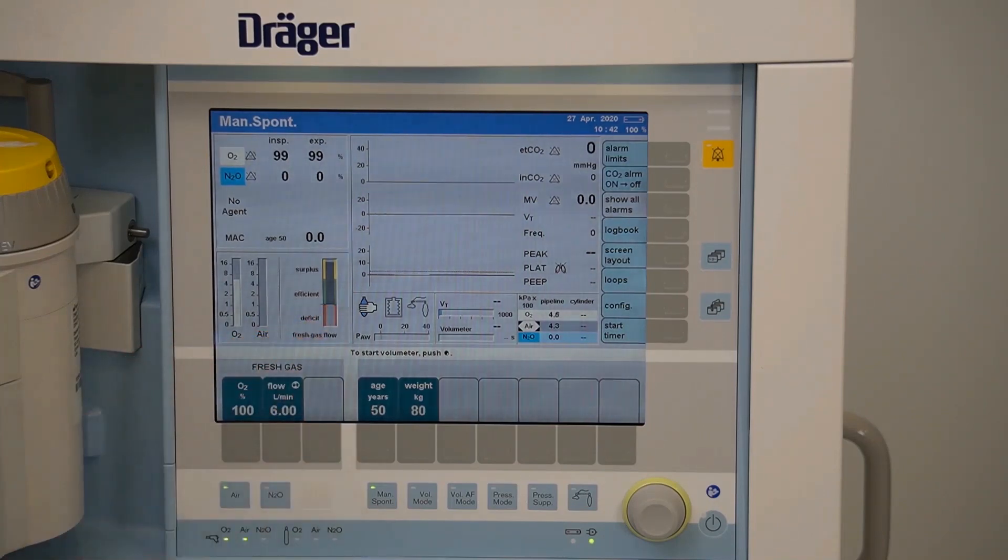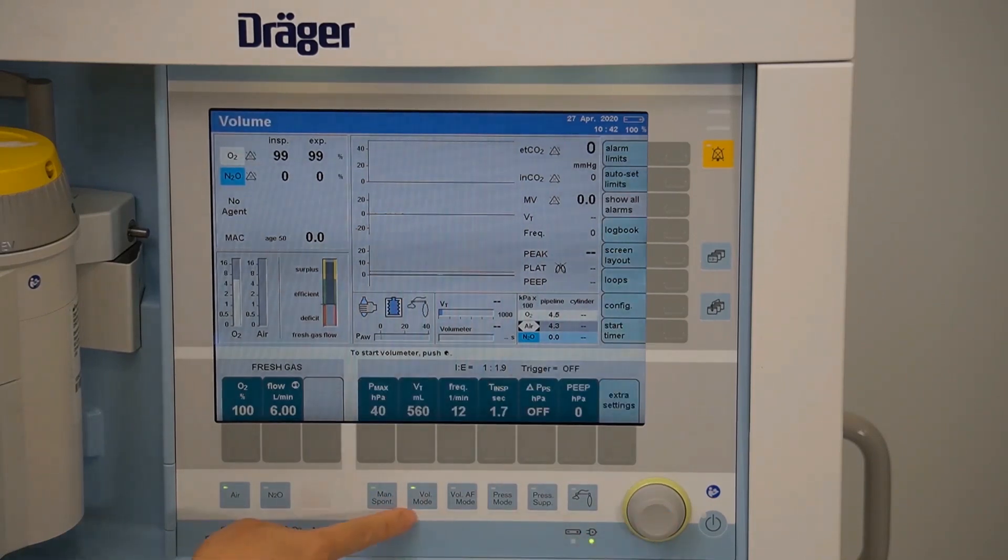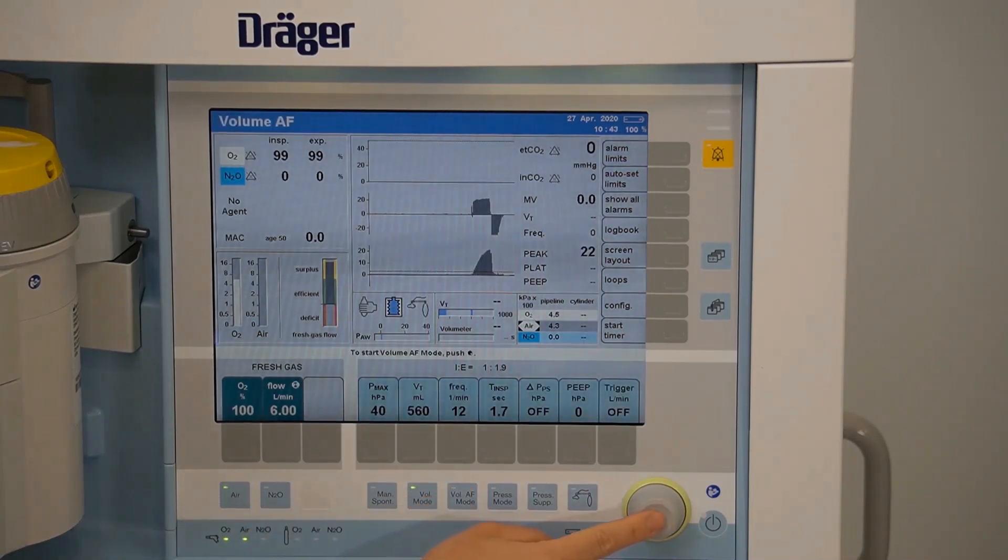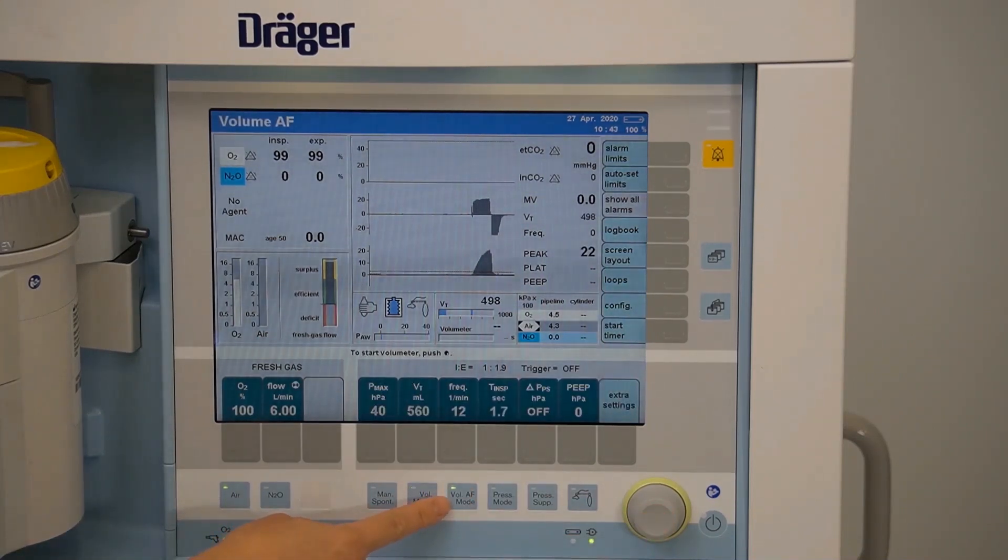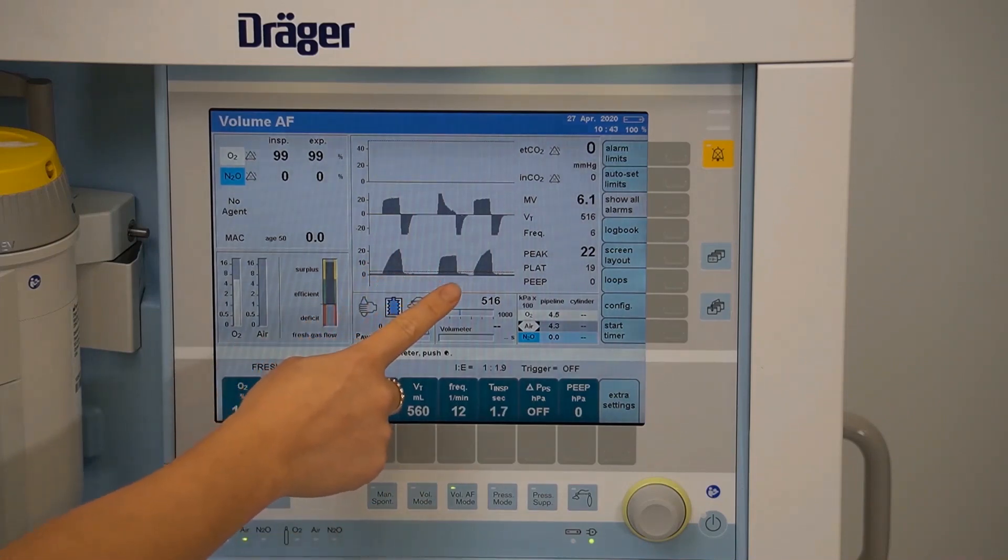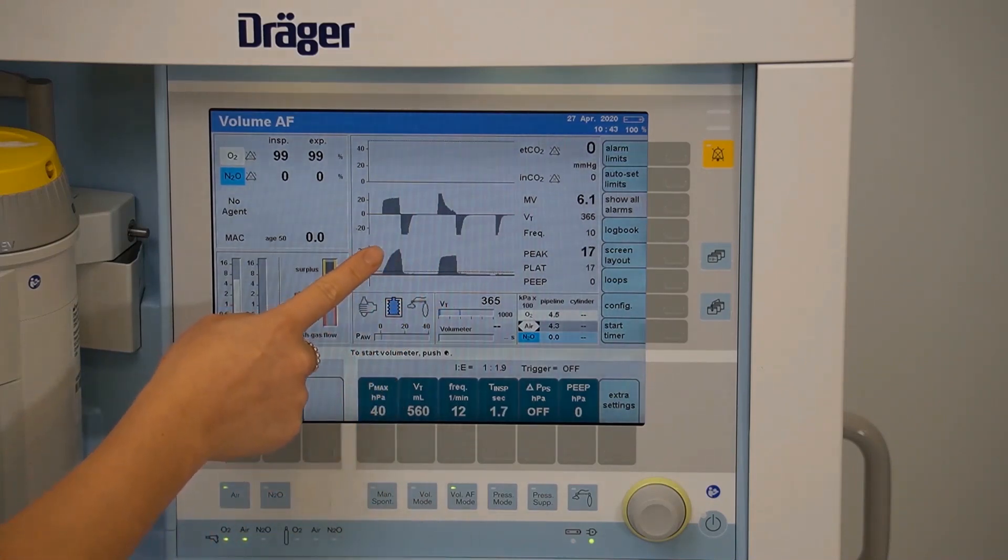Volume mode will allow you to set your target tidal volume. Vol AF mode stands for volume auto flow mode. This will target your set tidal volume but regulate your airway pressure breath by breath. It'll avoid that peak inspiratory pressure and have a more rounded top which indicates lung protective ventilation.